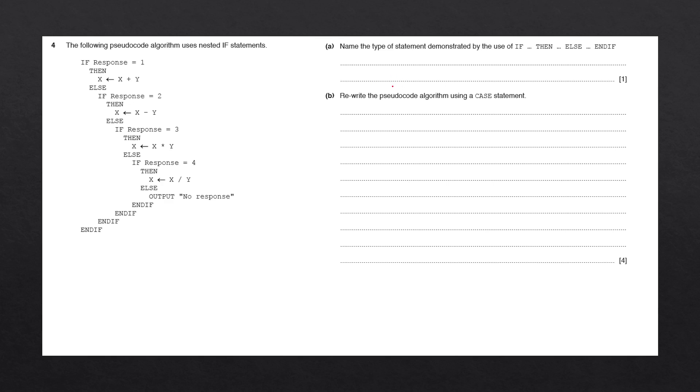The type of statement refers to one of the six basic constructs of an algorithm: input, assignment, sequence, selection, repetition, and output.